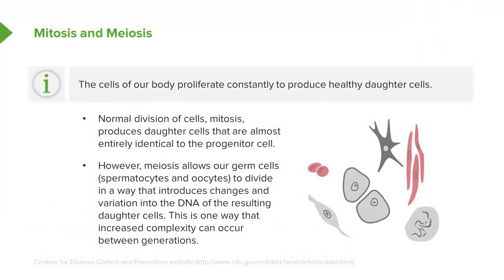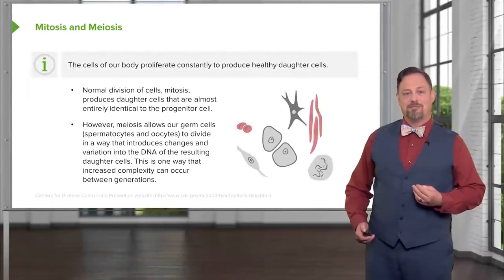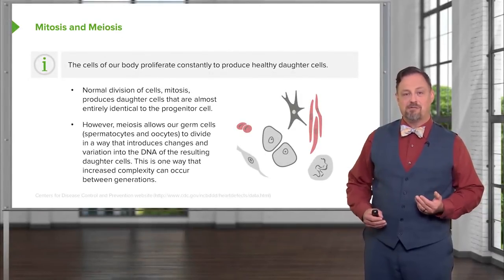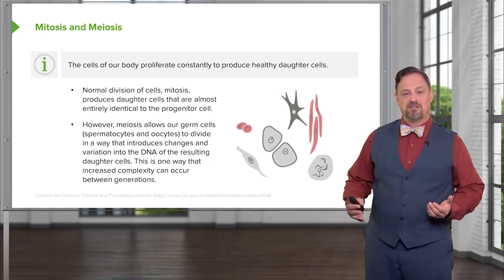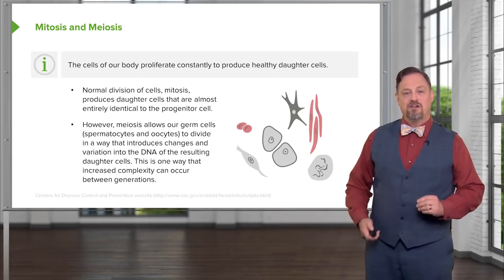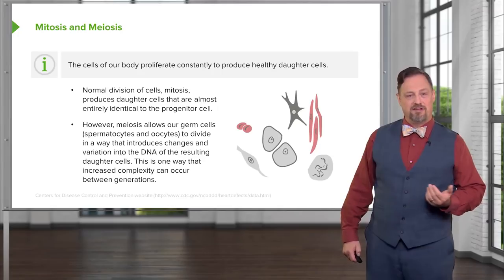However, meiosis is the process by which we produce germ cells, and if our germ cells were exact copies of our own regular cells, our children would have very little genetic variability from us. But the process of meiosis has several means by which genetic variability is introduced so that when one germ cell combines with the germ cell from another person, we get a new and very genetically distinct individual as a result.